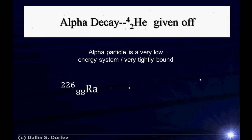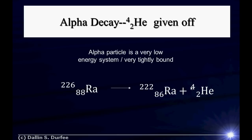The next type of decay is alpha decay. An alpha particle is just a helium-4 nucleus, and helium-4 is a very tightly bound, very stable, low energy nucleus. So if you want to lower the energy of a system, it's not a bad idea to make alpha particles — that's the basic idea. So radium-226 decays through alpha decay: it spits out an alpha particle. We don't have to have neutrinos here because we're not changing the number of electrons — we're just spitting a piece of the nucleus out. The helium nucleus has two protons, so our atomic number goes down by two, and it has four nucleons, so the atomic mass number goes down by four.